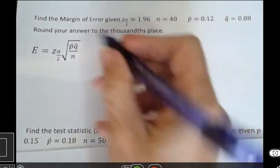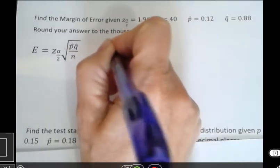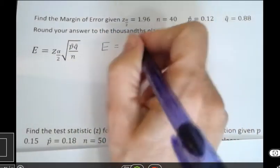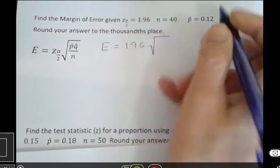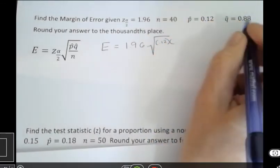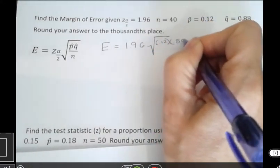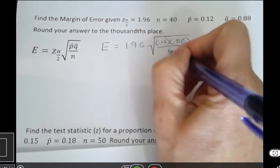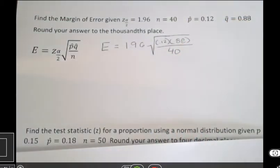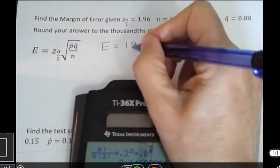So I'm going to go ahead and substitute into the formula. I get 1.96, and then I'm going to have the square root of 0.12 times 0.88, that's all over 40. So now I'm going to go ahead and put that into my calculator.